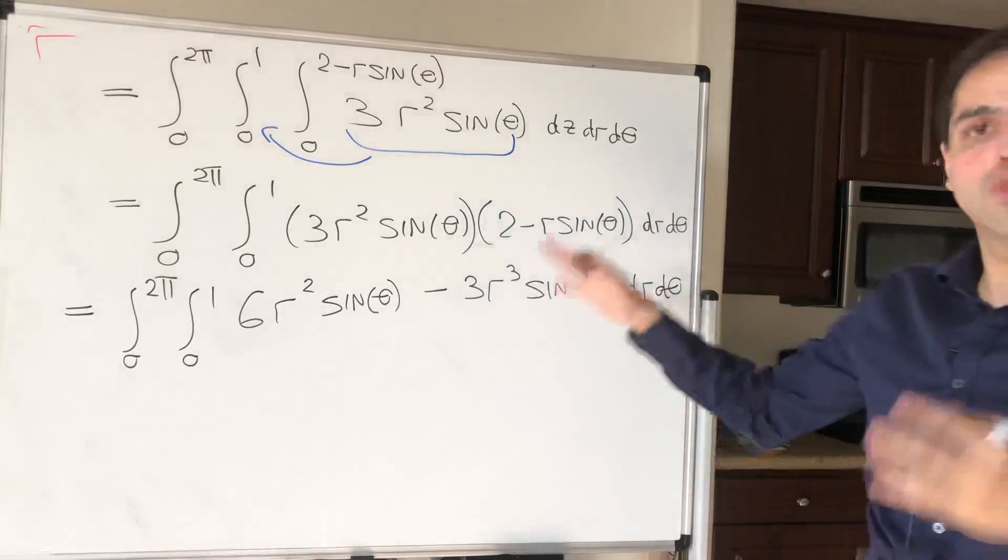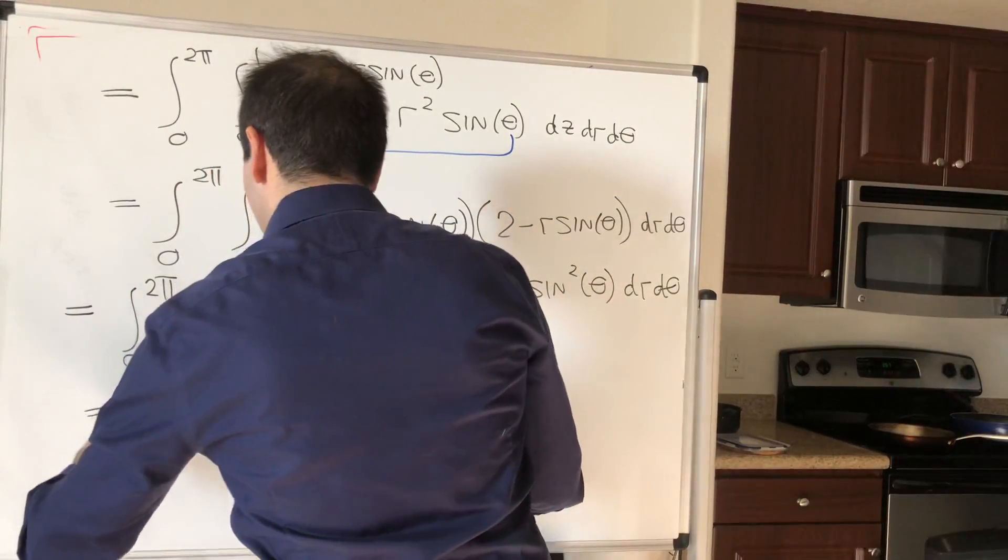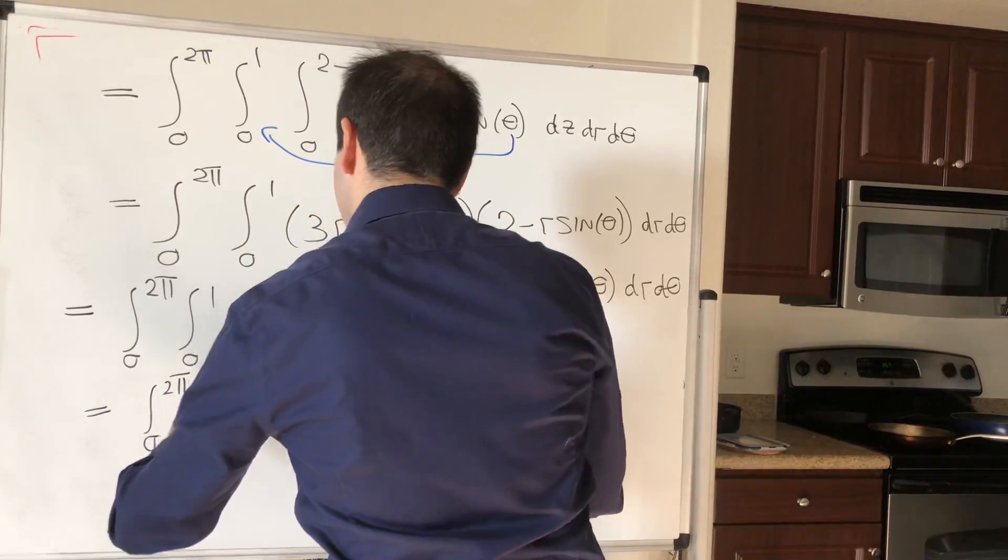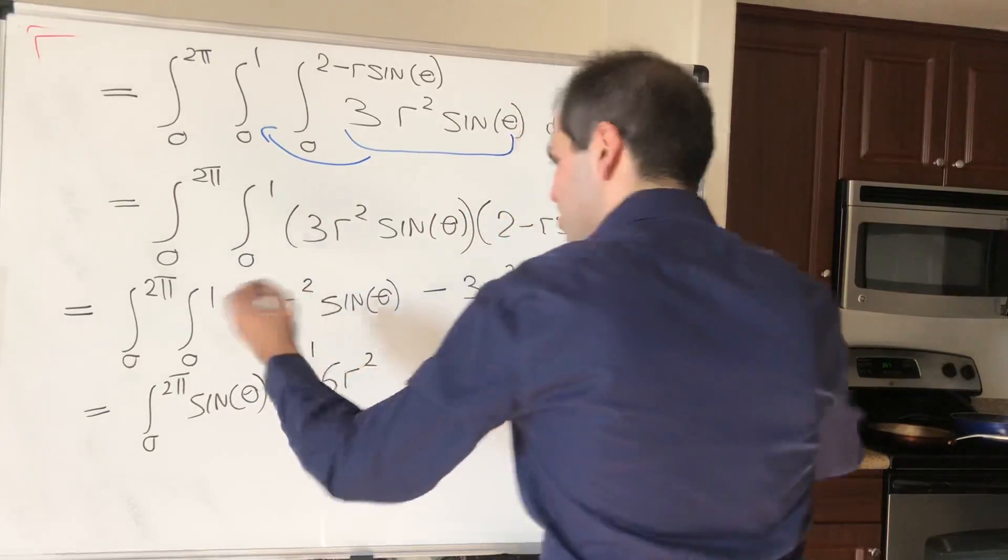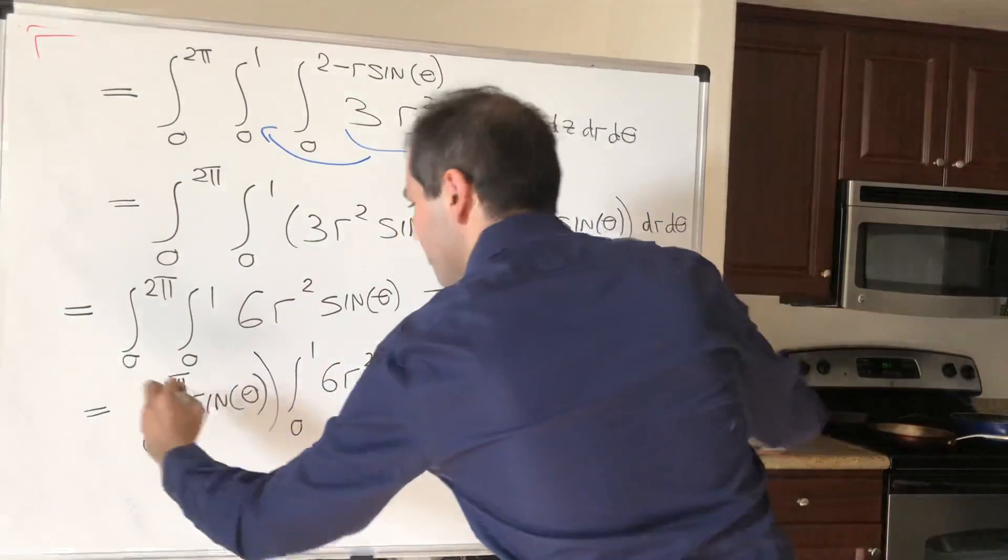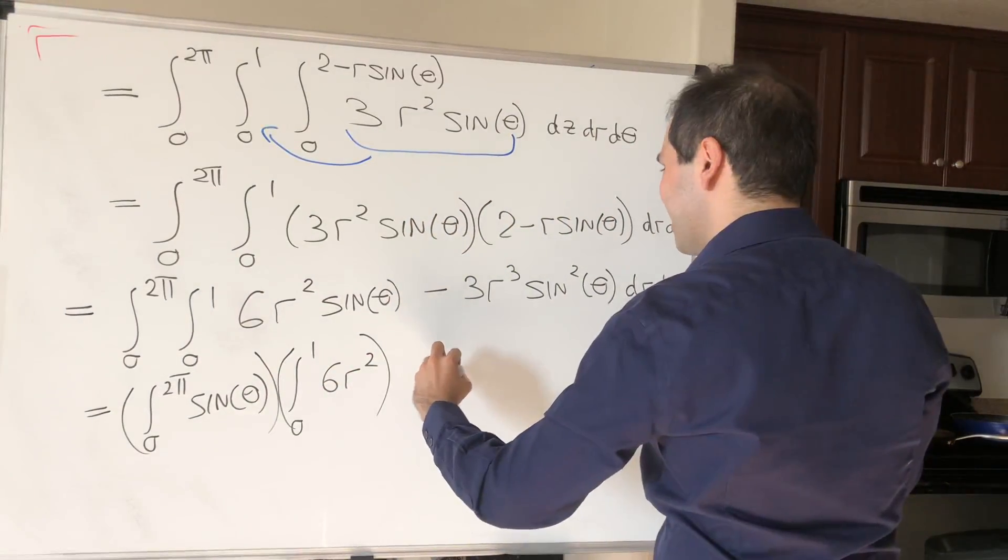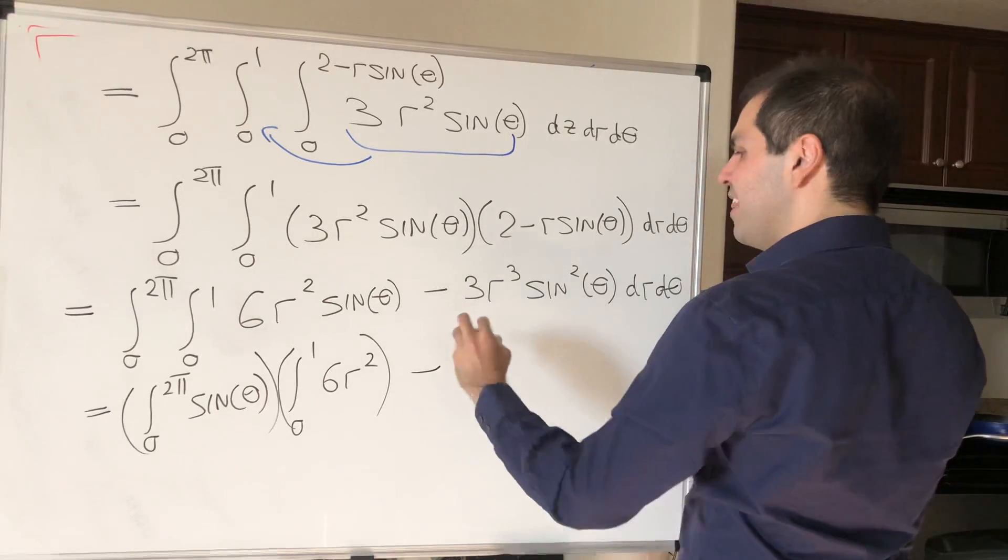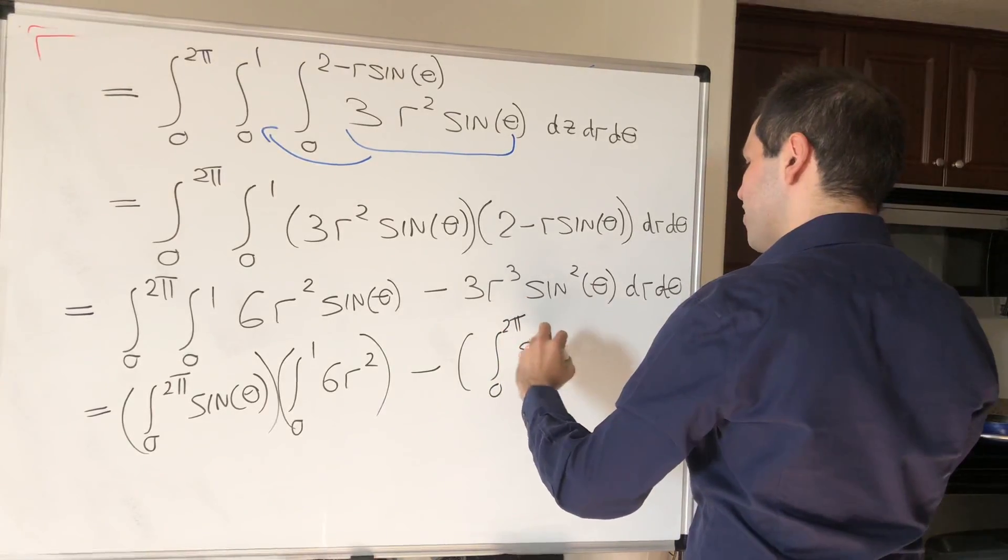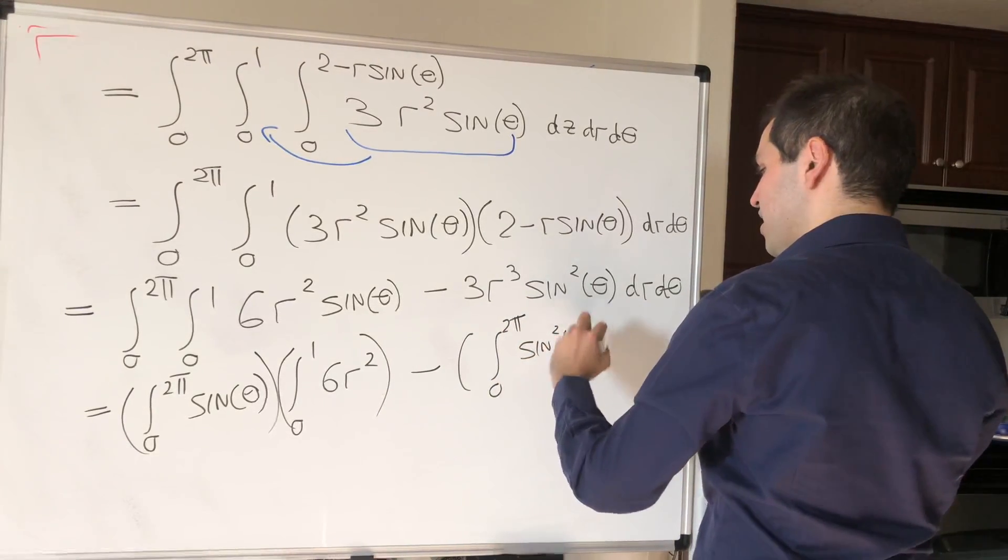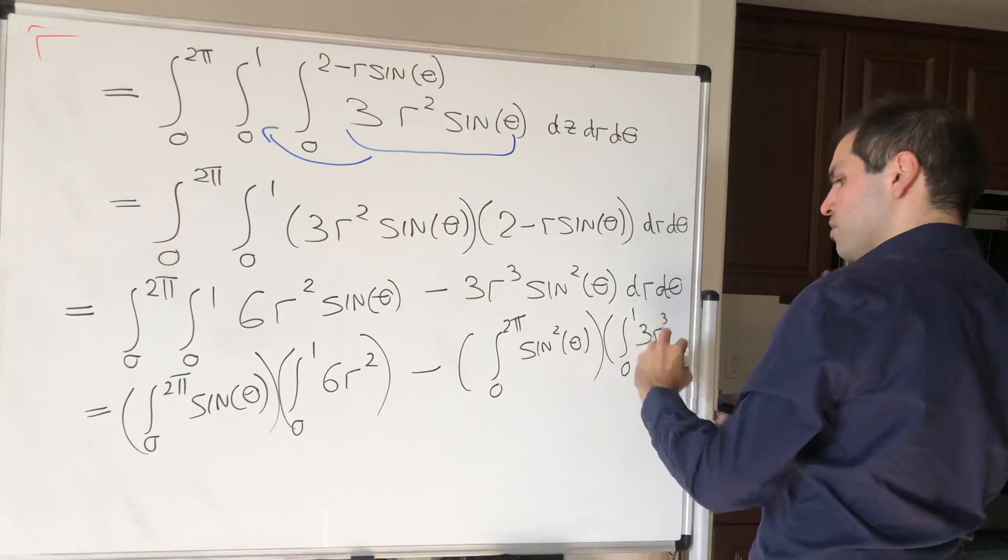But each piece we can just split up into two integrals, so this becomes integral from 0 to 2 pi of sine of theta d theta, and then integral from 0 to 1, 6r squared dr. I'm saving some space by not writing this thing down. And then integral, again from 0 to 2 pi, of sine squared of theta d theta, and integral from 0 to 1 of 3r cubed dr.